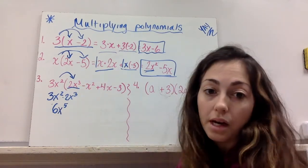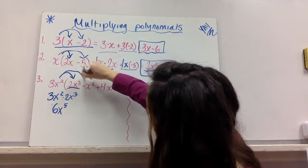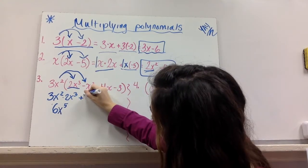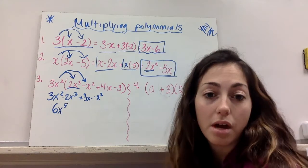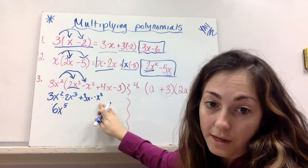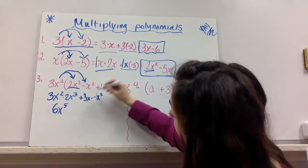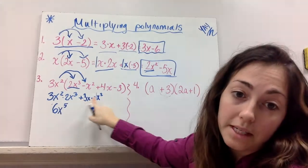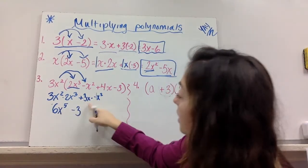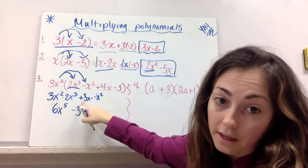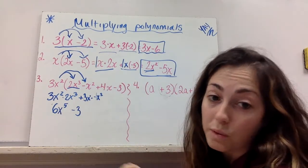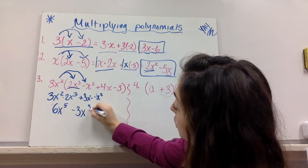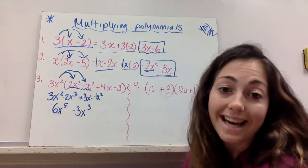So now this term is done. Next term. 3x squared, and it's positive, times negative x squared. 3x squared times negative x squared. Well, this is like a negative 1. Now positive 3 times negative 1 is negative 3. x squared times x squared. Combine your exponents. This exponent's really like a 1. And 1 plus 2 is 3. So I have negative 3x cubed. This guy is done.